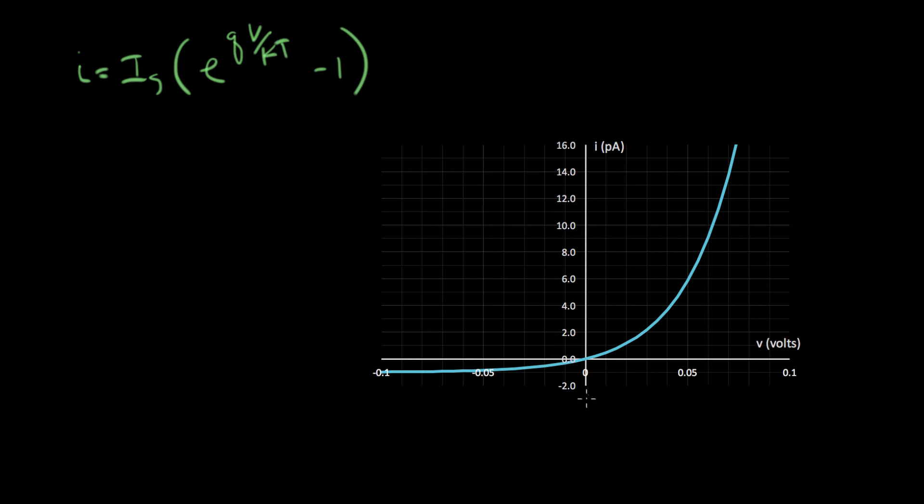I equals IS times EQV over KT minus 1. Here's a close-up. Here's an extreme close-up on the origin of the diode curve. The voltage scale is blown up by about a factor of 10, so here's one tenth of a volt forward across the diode. And the current scale is super blown up. This is in picoamperes now, so this is in 10 to the minus 12 amperes instead of 10 to the minus 3. And you can see here, this is a more familiar-looking exponential curve.